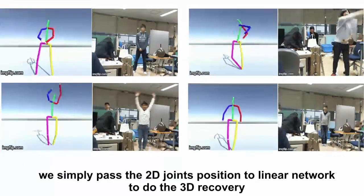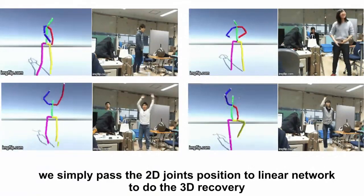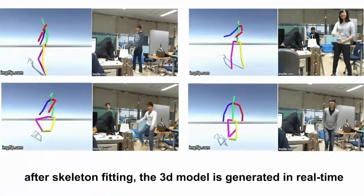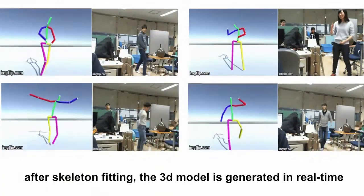We simply pass the 2D joints to a linear network to do the 3D recovery. After the skeleton fitting, the predicted 3D model is generated in real time.